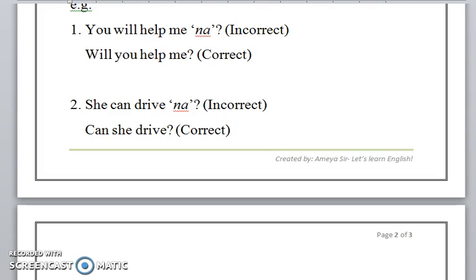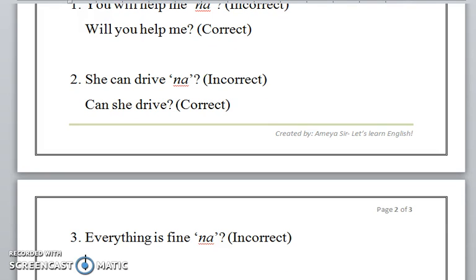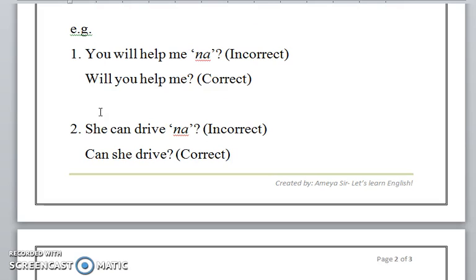Let's do one more example: 'Everything is fine na'. Yet another incorrect way of asking a question. The arrangement is incorrect, so rearrange to 'Is everything fine?' and suddenly there is no need for 'na' to intervene. Let's go through these examples again.